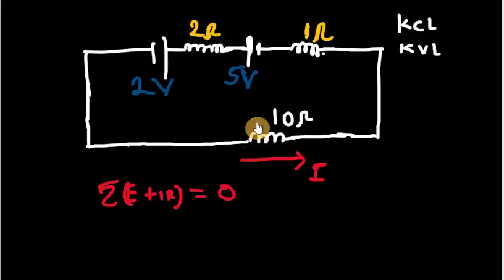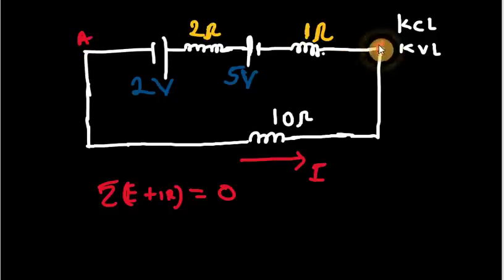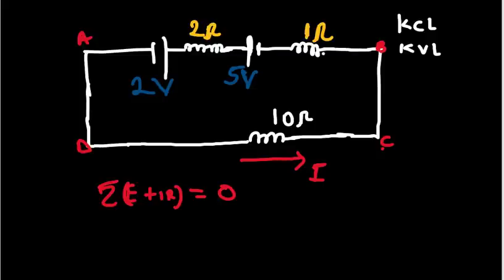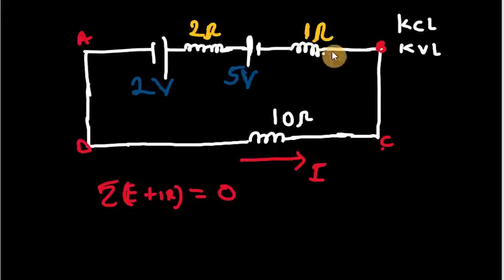Now let us look at the conventions. To solve a problem using Kirchhoff's voltage law, you must first identify a loop. A loop is a closed path in a circuit. For instance, labeling the nodes A, B, C, and D — that forms a loop. In this problem we have just one loop. You can also identify a junction, but here we just have two lines meeting, so we take this as a single loop.